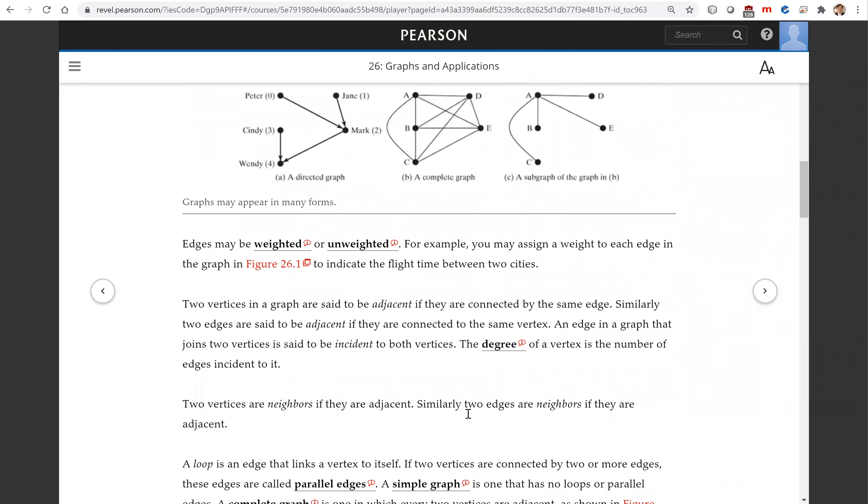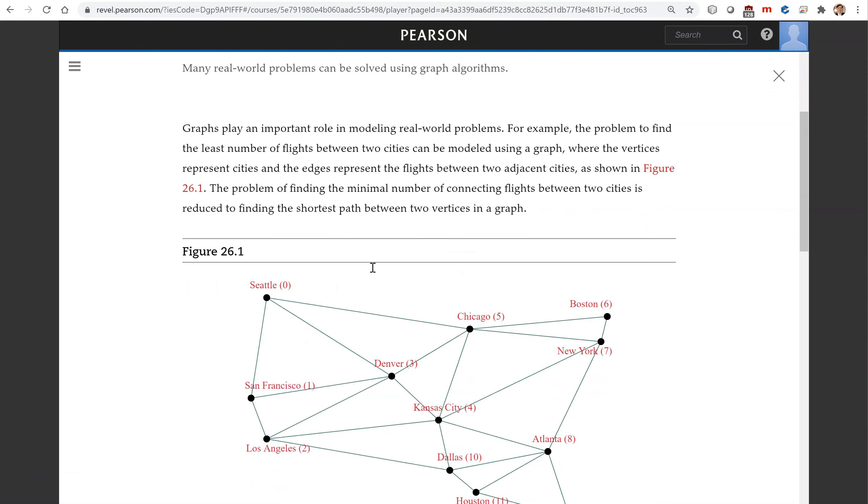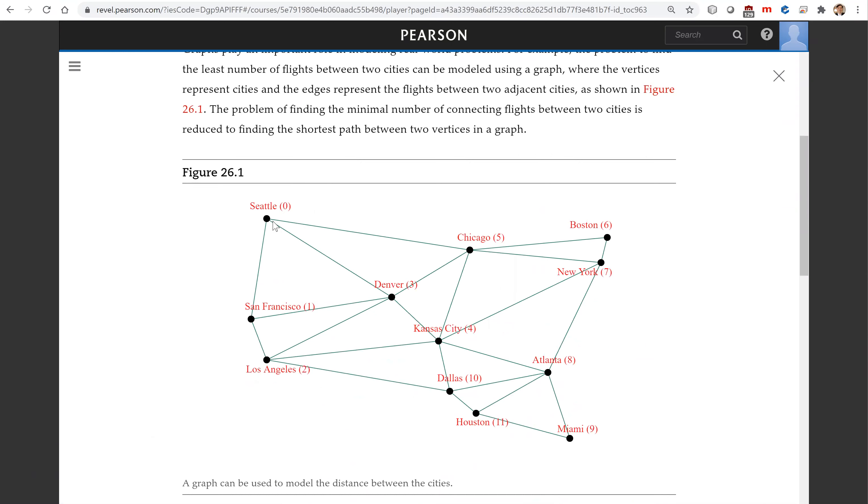Edges may be weighted or unweighted. For example, you may assume the US map, you have all the cities here. You may assign a weight on the edge representing the distance between the two cities.